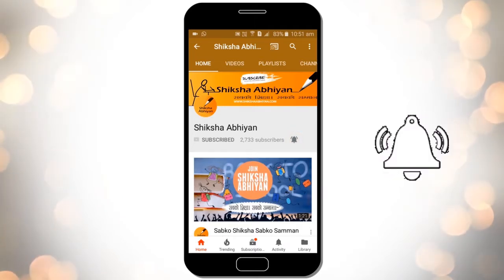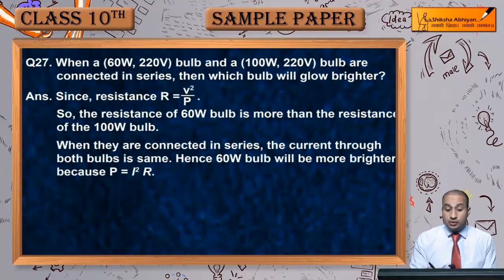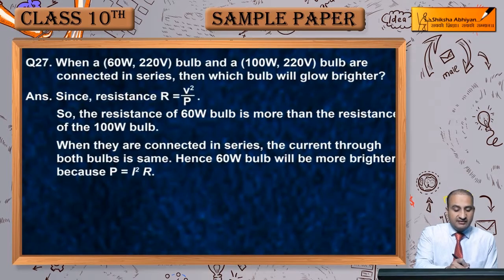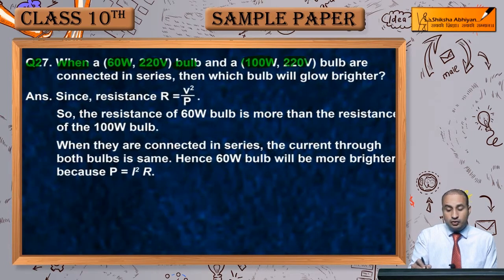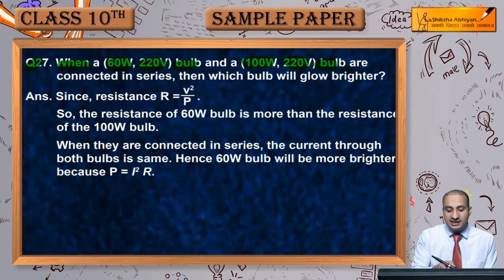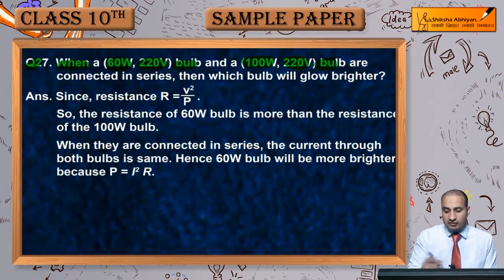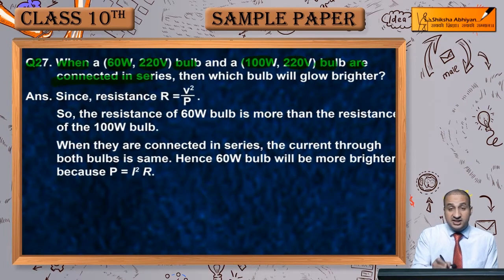Question 27: When a 60 watt, 220 volt bulb and a 100 watt, 220 volt bulb are given the same voltage, but have power ratings of 60 watt and 100 watt respectively, which bulb will glow brighter?